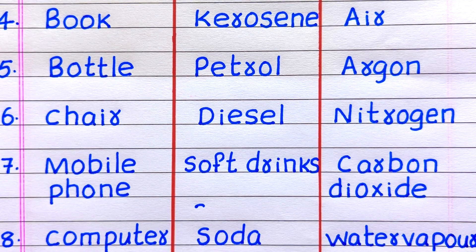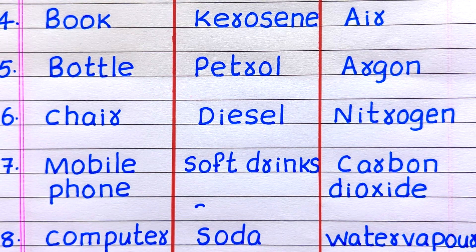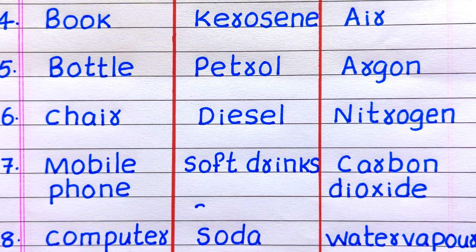Fourth example of a solid is book, fifth bottle, sixth chair, seventh mobile phone, eighth computer. Fourth example of a liquid is kerosene, fifth petrol, sixth diesel, seventh soft drinks, eighth soda.